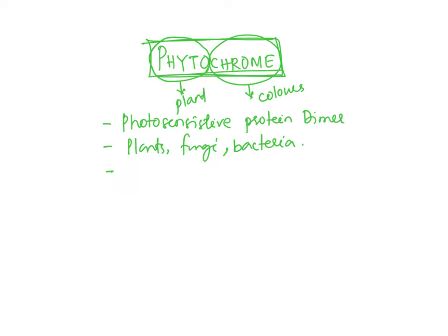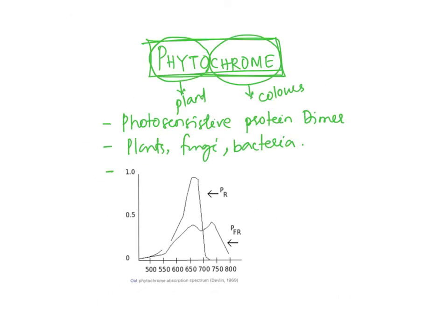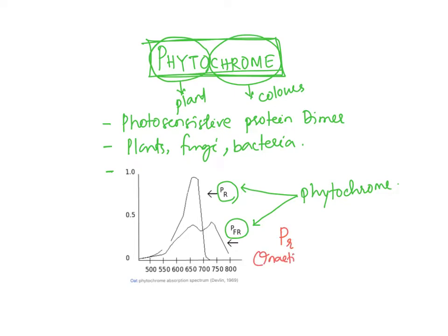Phytochrome exists in two forms: PR and PFR. PR is the inactive form, and PFR is the active form. When PFR is active, it is able to start different physiological processes. During the day, PR is converted to PFR, and during night, PFR reverts back to PR.